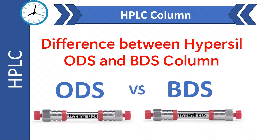In reverse phase HPLC, C18 columns are the workhorses of many methods. But did you know that not all C18s are created equal? Today we will compare two popular Hypersil phases, the classic ODS and the advanced BDS. By the end of this video, you will know exactly which one to pick for your compounds. So let's get started.